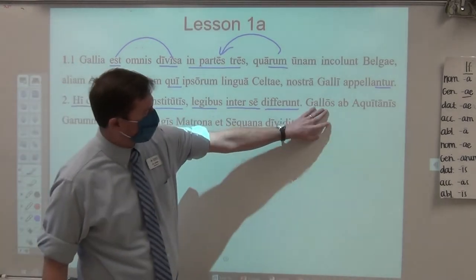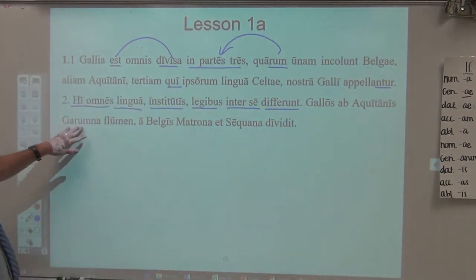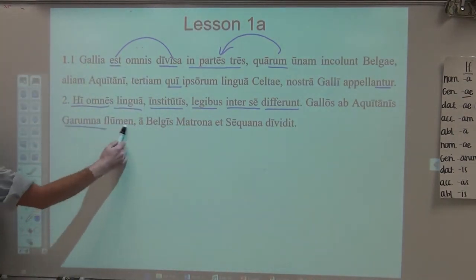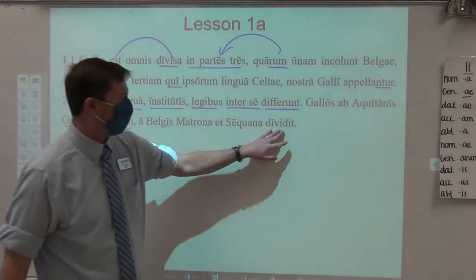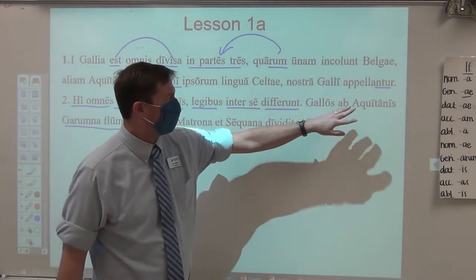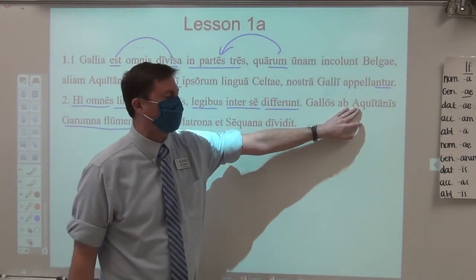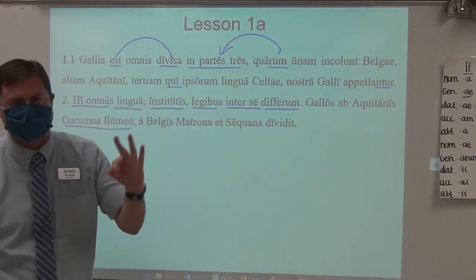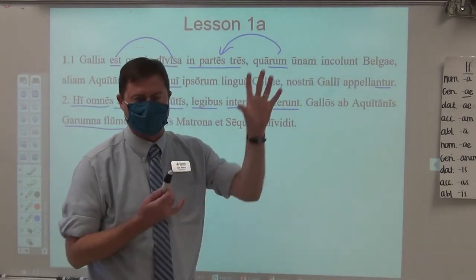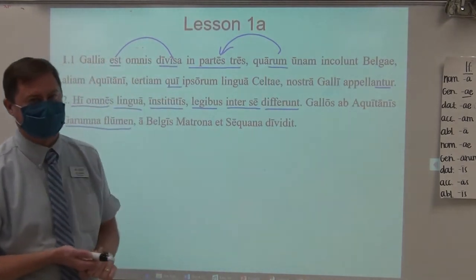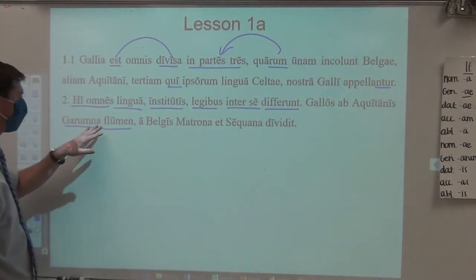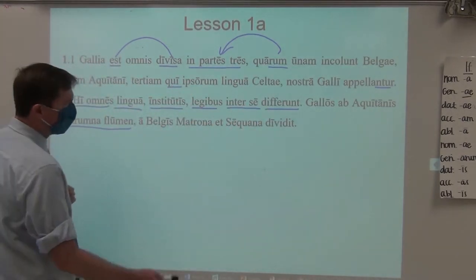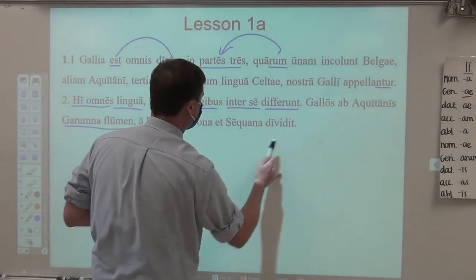Gallos is obviously our accusative direct object, so I'm looking for a subject, and I find it with the neuter singular 'Garumna flumen' — the Garonne River. The Garonne River divides the Gauls from the Aquitani, telling you the borders between these three main regions: the Belgians all the way up to the north, the Aquitani all the way to the south, and in the middle is Gaul as a whole. That same Garonne River divides the Gauls from the Aquitani, and the Matrona and Sequana River — the Marne and the Seine, the main river of Paris — divides those Gauls from the Belgians.